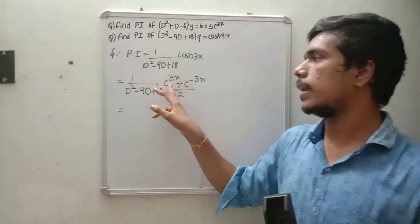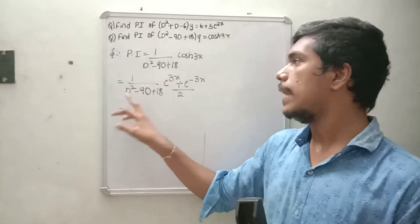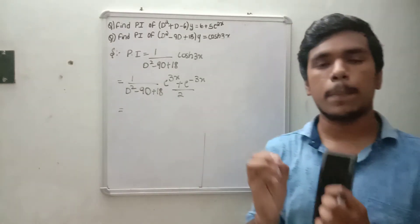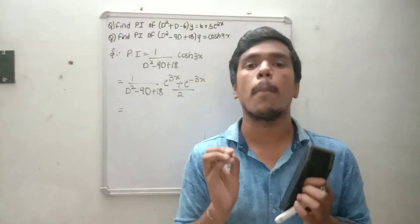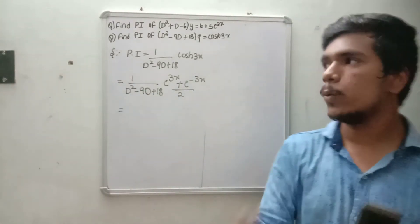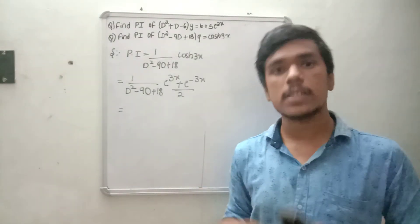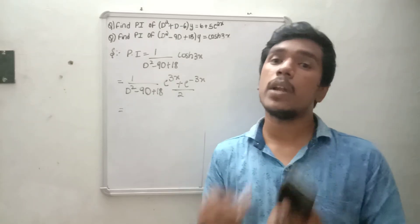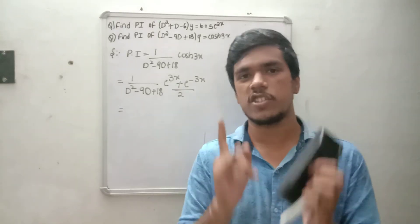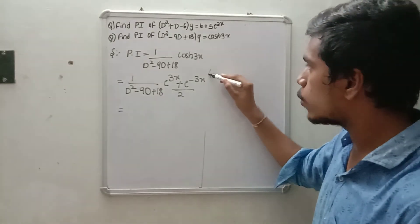For the e to the power 3x term, substitute D equals 3 into the equation. For e to the power minus 3x, substitute D equals minus 3. If the denominator turns out to be 0, then we apply differentiation. If the denominator is a nonzero constant, we proceed directly to evaluate the answer.